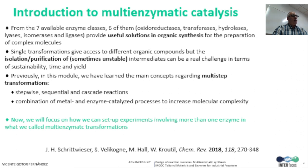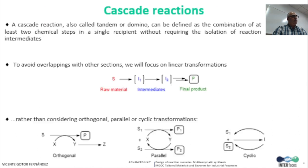Focusing on multi-enzymatic synthesis, here you can find some examples of this research area that is gaining increasing attention in recent years. Moving back, we need to remember that a cascade reaction — also called tandem, domino, or domino processes — can be defined as the combination of at least two chemical steps in a single vessel without requiring the isolation of reaction intermediates.